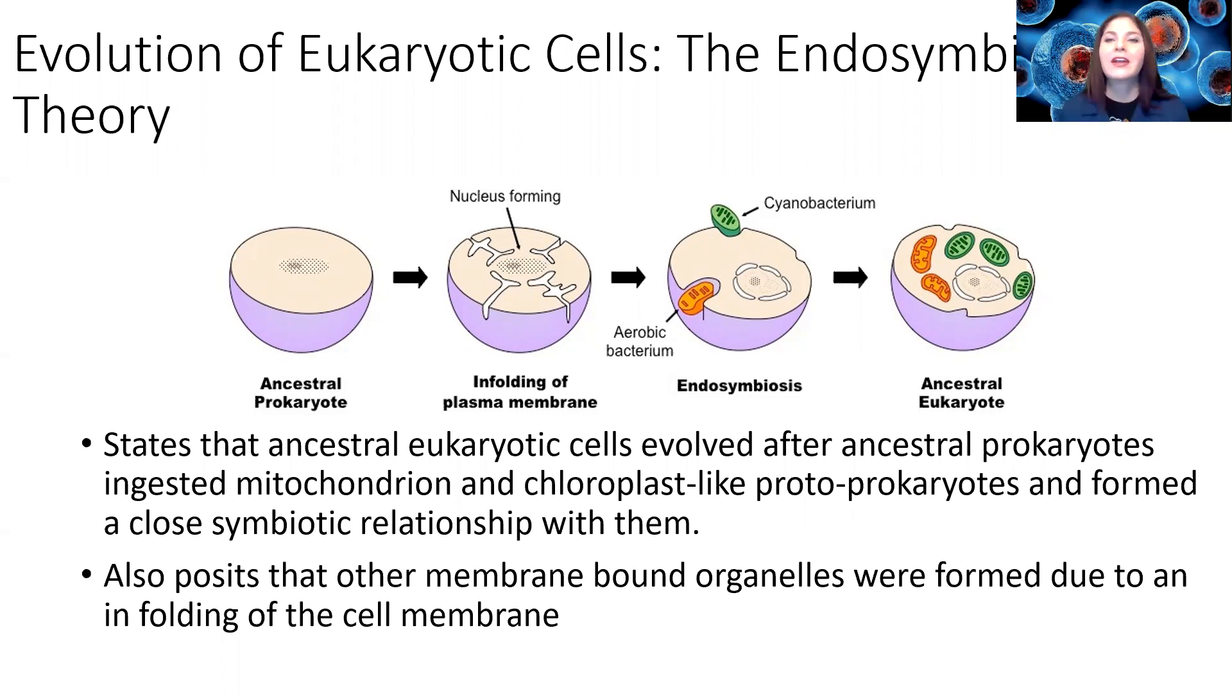So endo means inside of, and symbiotic or symbiosis refers to organisms living together. So the symbiotic theory, or the endosymbiotic theory, states that ancestral eukaryotic cells evolved after ancestral prokaryotes ingested mitochondria and chloroplast-like protoprokaryotes. Now that word proto means before. So it's saying that they weren't quite prokaryotic cells, but that they were ingested by prokaryotic-like cells and they formed a very close symbiotic relationship with them. So this also posits that other membrane organelles, such as the nucleus, were formed due to an infolding of that cellular membrane.